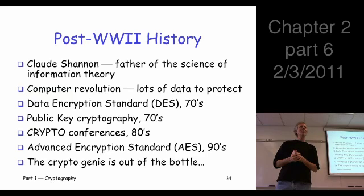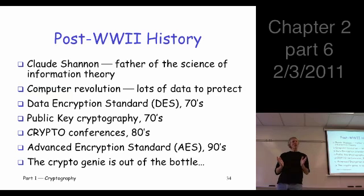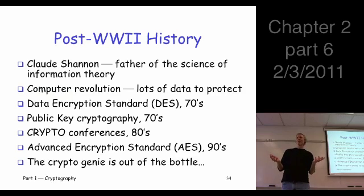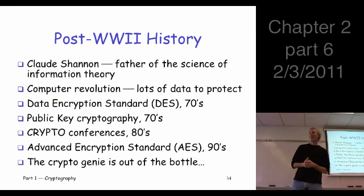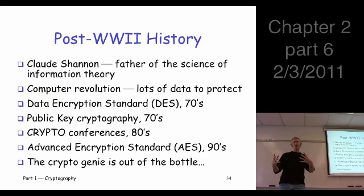Nobody in the outside world really did cryptography. The problem was, prior to computers, it was really expensive and time-consuming. Most of the ciphers used even through World War II didn't use computers because there weren't really computers at the time. A lot of them were hand systems. In fact, codebooks were the most popular cipher even through World War II.